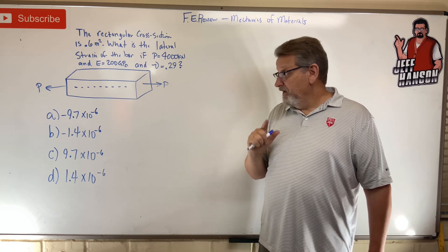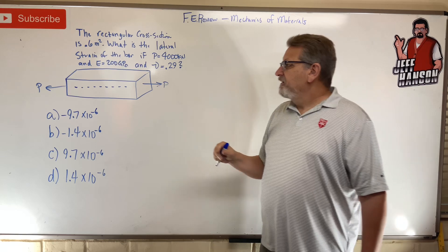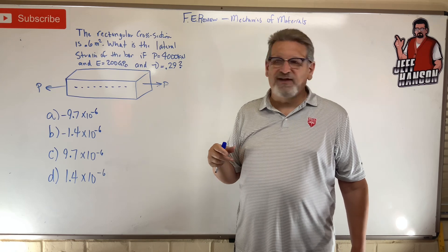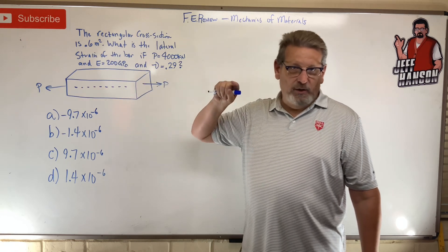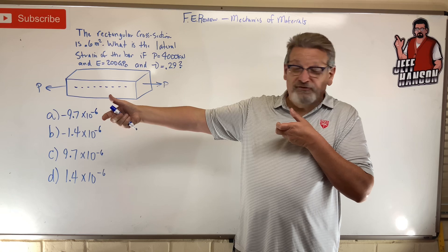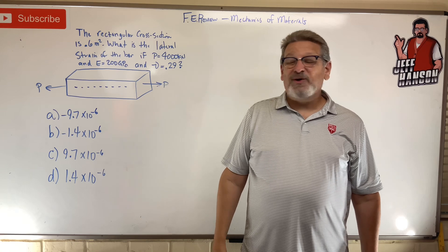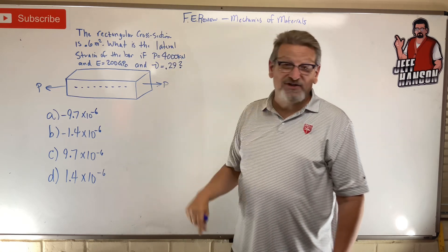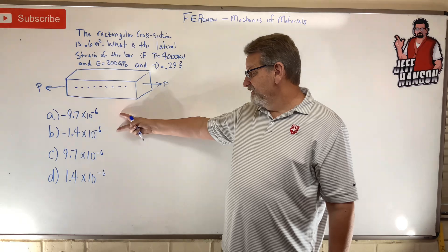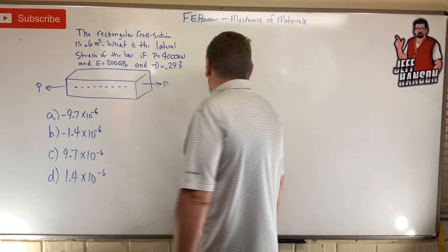Are you back? Number one: on the FE, if you can eliminate answers, do it. If I stretch this bar longitudinally — along the axis — it gets longer, that's positive. What does the cross-section do? It gets smaller. So I know as I stretch it, the lateral direction is going to go negative. So only one or two of these answers really make sense. It's one of those two — if you already got one of the positive ones, you got it wrong.